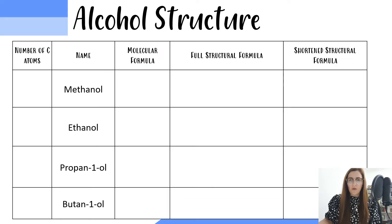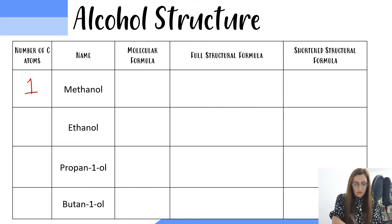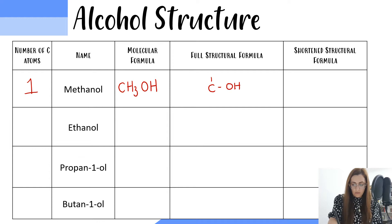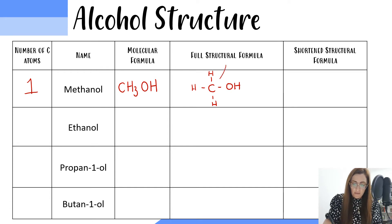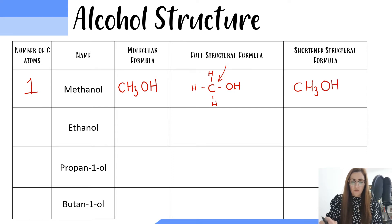In the family of alcohols, the first alcohol is called methanol. Methanol has one carbon and it has the molecular formula CH3OH. Its full structural formula will be a carbon with a hydroxyl group and three hydrogens. The shortened structural formula is a way of writing the formula without the bonds. This carbon has three hydrogens attached, and then we pop the OH group at the end. So the shortened structural formula and the molecular formula of methanol are the same.